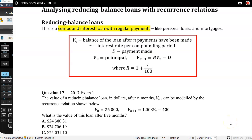So let's start talking about these real-life situations of reducing balance loans with recurrence relations. First off, we're going to talk about them using a recurrence relation. Remember, it's a relation if we've got the initial and then that rule that links them, the initial and the rule that links the current term to the next term.